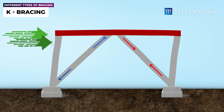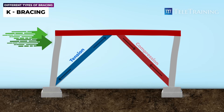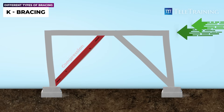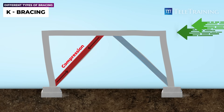As you can see, there are two parts to a K-brace. One member is used in tension, and the other is used in compression. When the building moves in the other direction, the opposite will happen — this member will be in compression, and this one will be in tension.